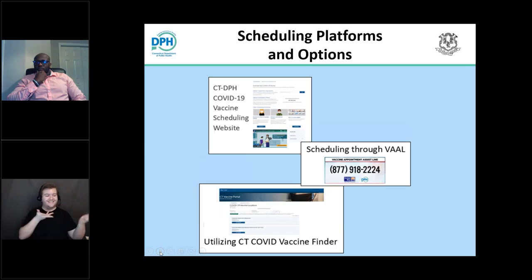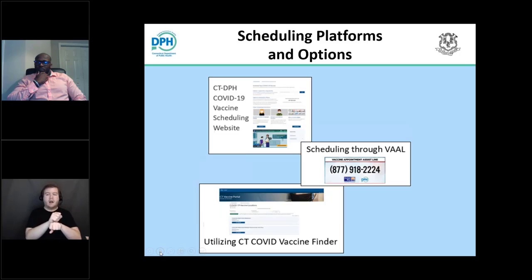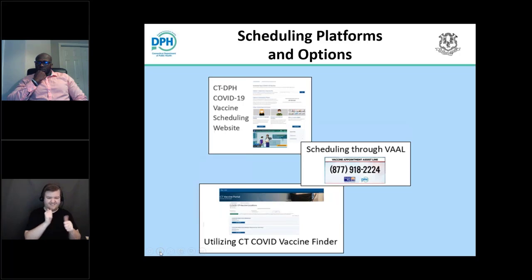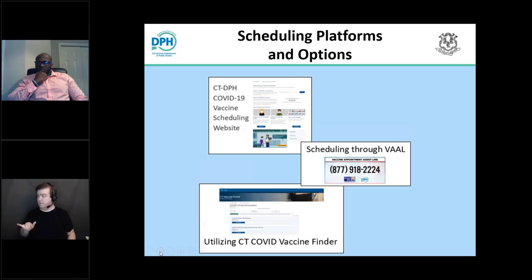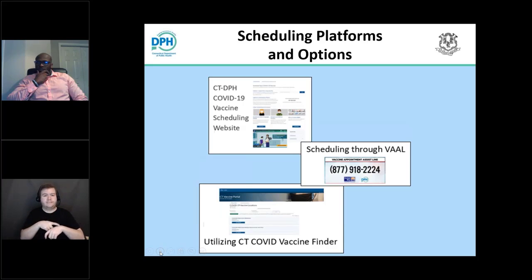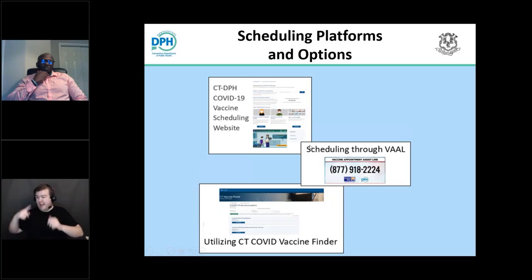Recipients can continue to check for more appointments as vaccine providers are adding slots and other vaccine eligible recipients are changing or canceling their appointments. Some folks will try to schedule and find a slot, make the appointment, and then hear that a friend randomly got in sooner. It's not anything anybody could plan for — the scheduling of appointment times is somewhat like a roulette. Sometimes it's the luck of the draw that you get it sooner than you thought. We're going to go over each of these three different platforms and options.